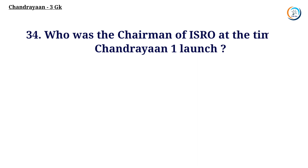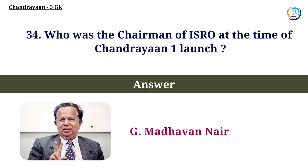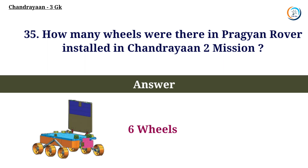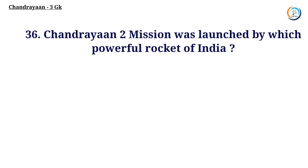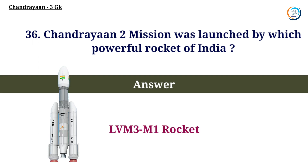Who was the chairman of ISRO at the time of the Chandrayaan-1 launch? Answer: G. Madhavan Nair. How many wheels were there in the Pragyaan rover installed in the Chandrayaan-2 mission? Answer: Six wheels. Chandrayaan-2 was launched by which powerful rocket of India? Answer: LVM-3M1 rocket.